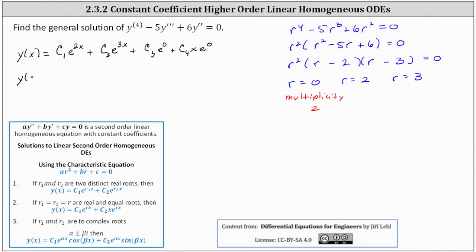Simplifying, the general solution is y of x equals c sub one e to the two x plus c sub two e to the three x. E to the zero is equal to one, giving us plus c sub three plus c sub four x. This is the general solution.